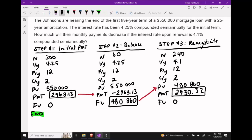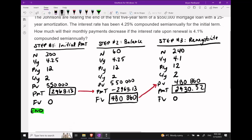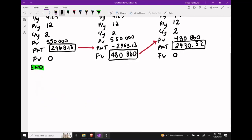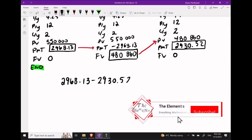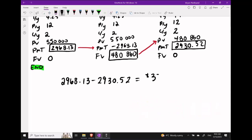And this means after the renegotiation phase, we have a new payment size of $2,930.52. So the difference between our equal-sized payments should be about $37.61.